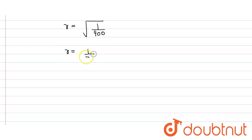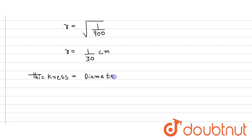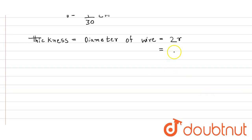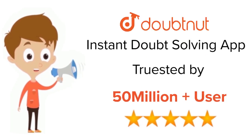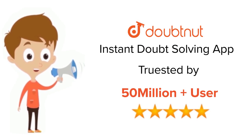We have to find the thickness, which is nothing but the diameter of the wire. The diameter equals twice the radius, so thickness equals 2 into 1/30, which equals 1/15 centimeter. That is our answer. For class 6 to 12, IIT JEE and NEET level, trusted by more than 5 crore students — download the DoubtNet app today.